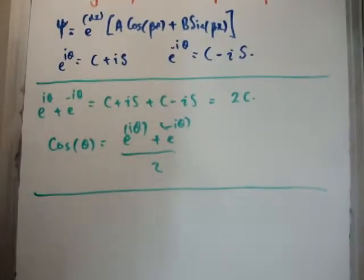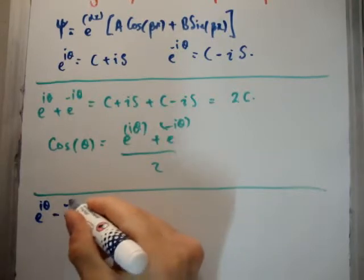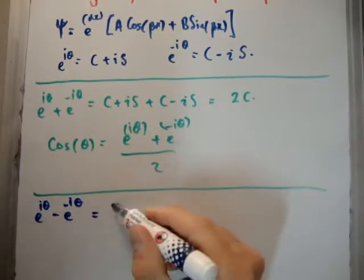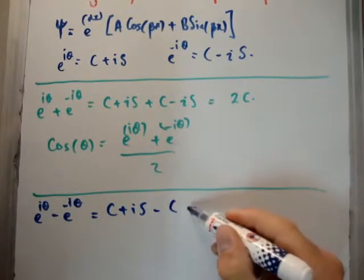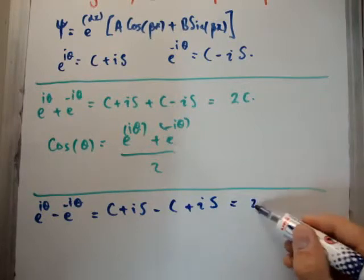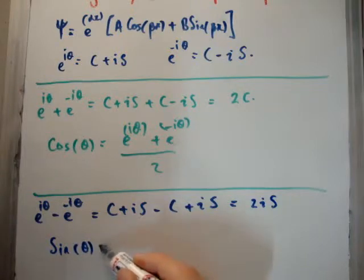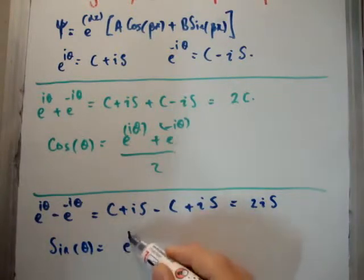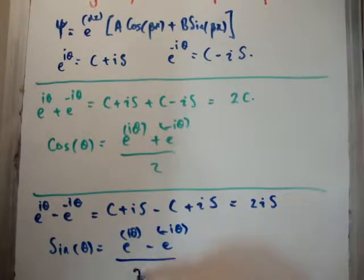Next, let's subtract them. We're going to have E to the i theta minus E to the minus i theta. That's going to be equal to cos plus i times sine minus cos plus i times sine is equal to twice i times sine. Rearranging, we can get the sine of theta is going to be equal to E to the i theta minus E to the minus i theta divided by 2 times i.